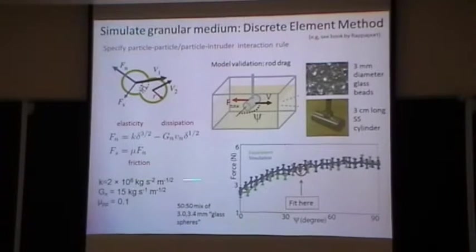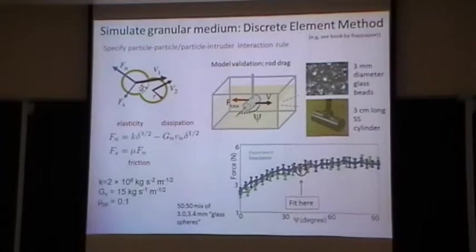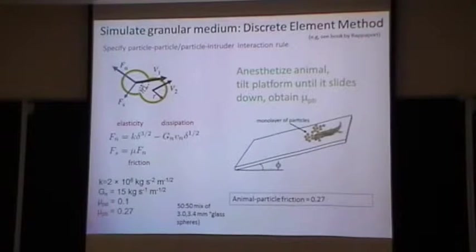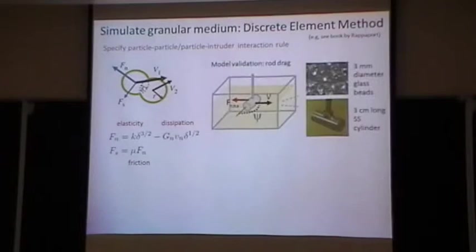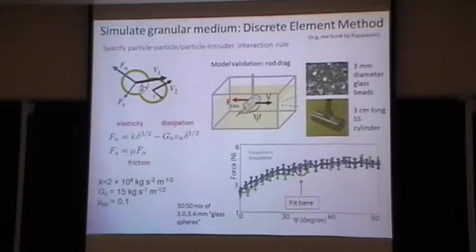These parameters in the DEM simulation are typically a factor of 100 to 1000 off from real-world values, but that doesn't seem to make much difference in anything we've observed. We also need a friction parameter — the friction between grains is about 0.1 — but there's also friction between the grains and the body.